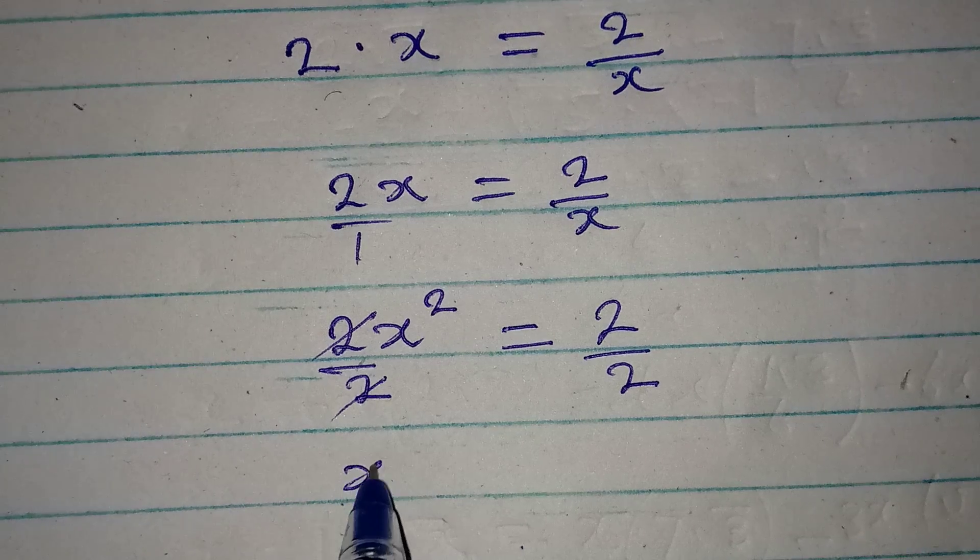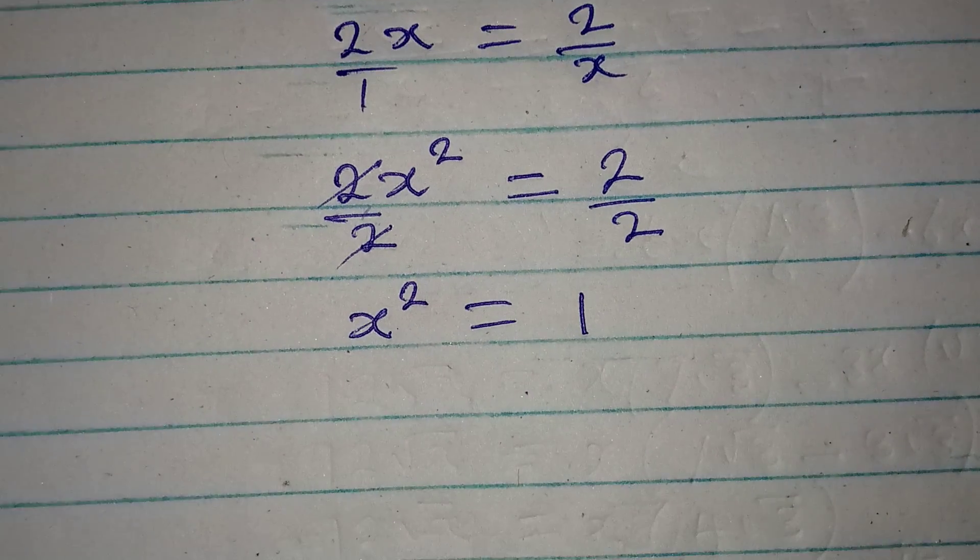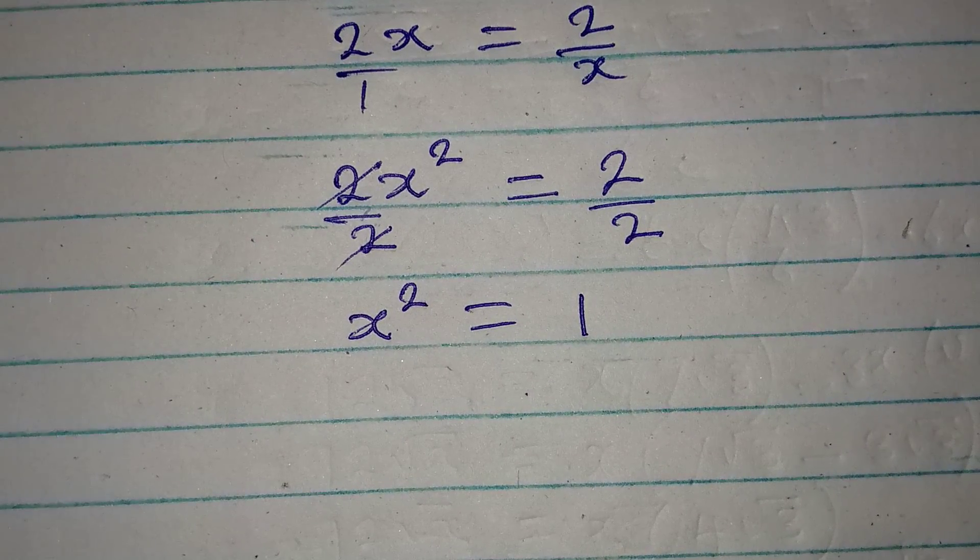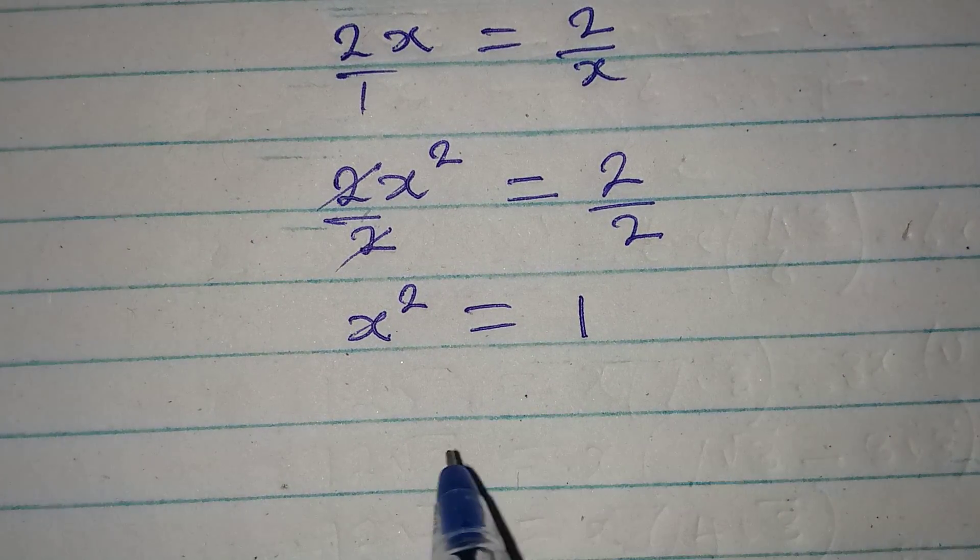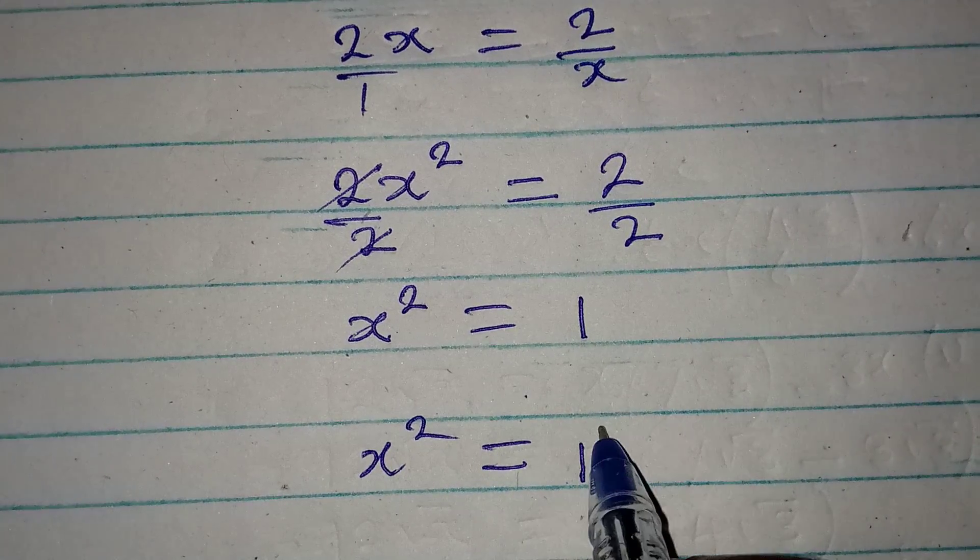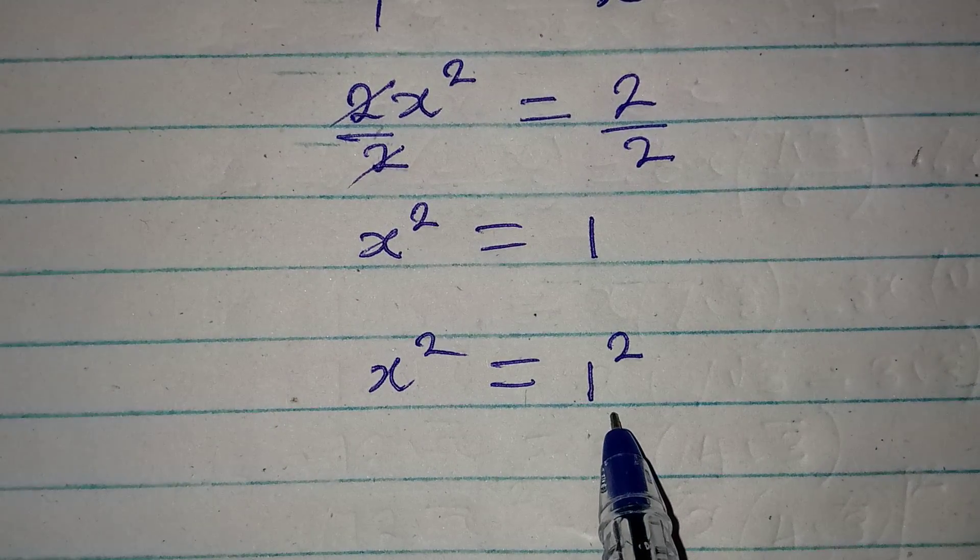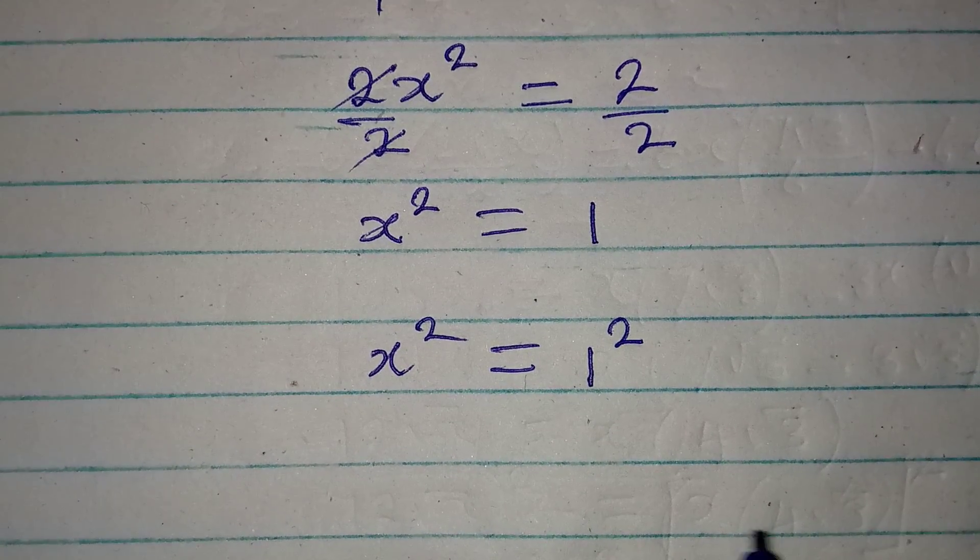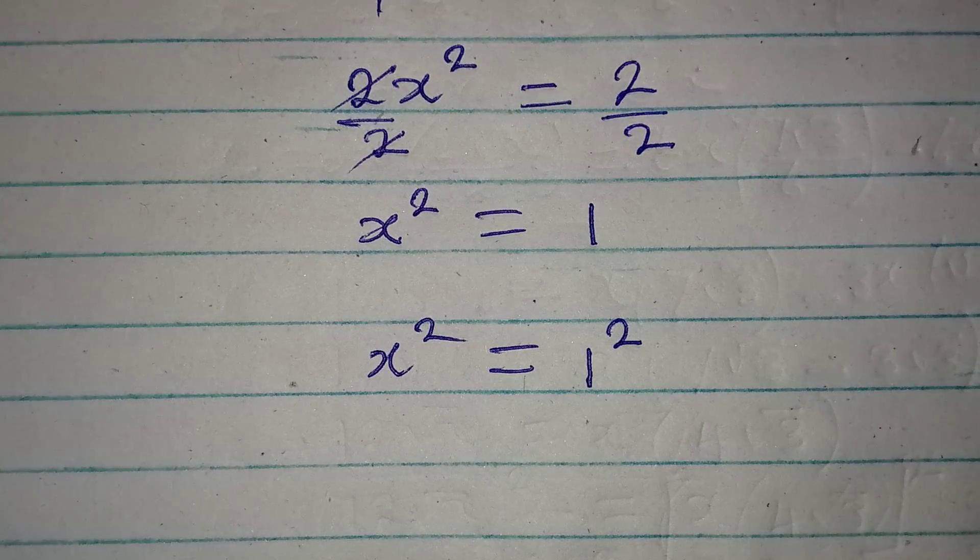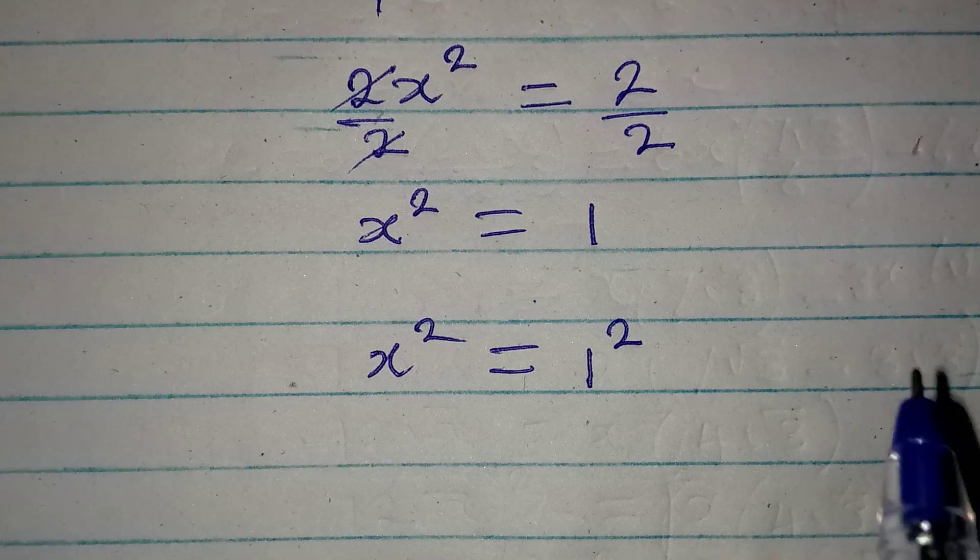These can cancel, and now x² is equal to 2/2 which is 1. By the way, do you also know that x² here can be equal to 1²? Because 1² will still give 1.